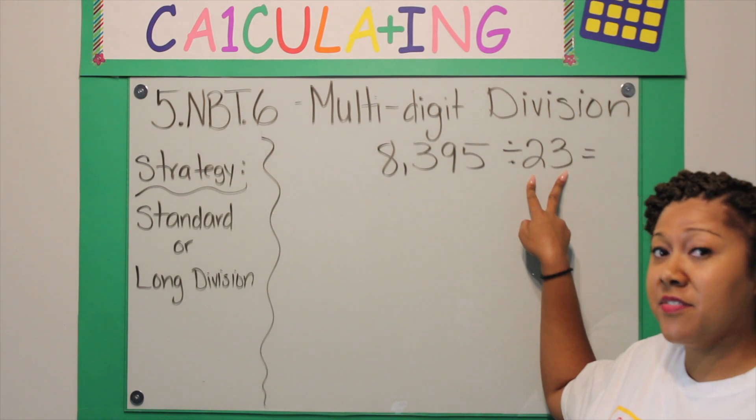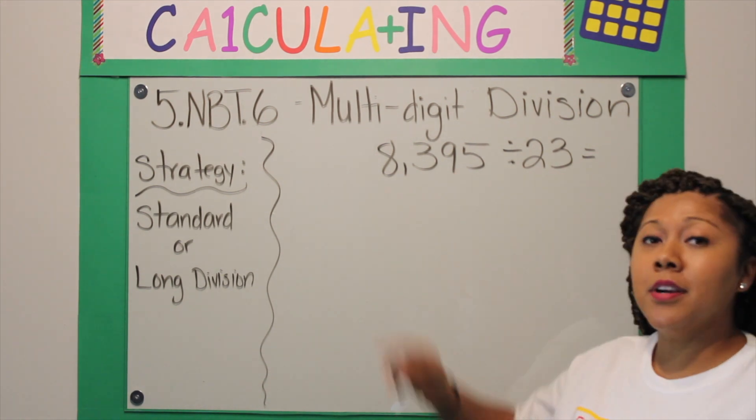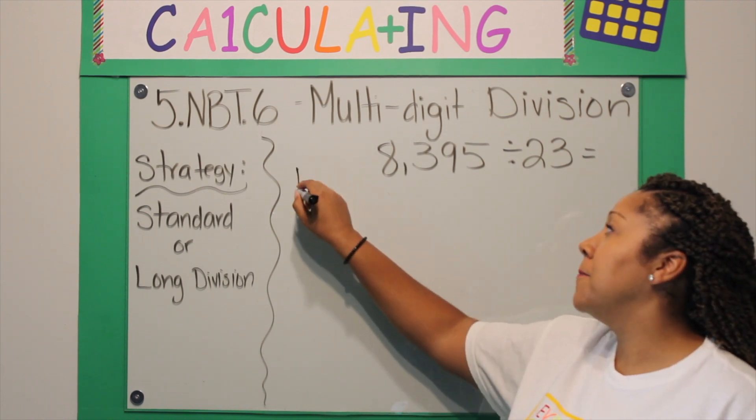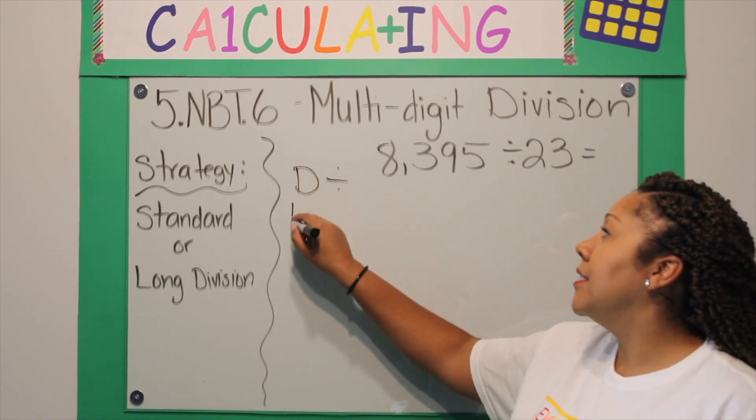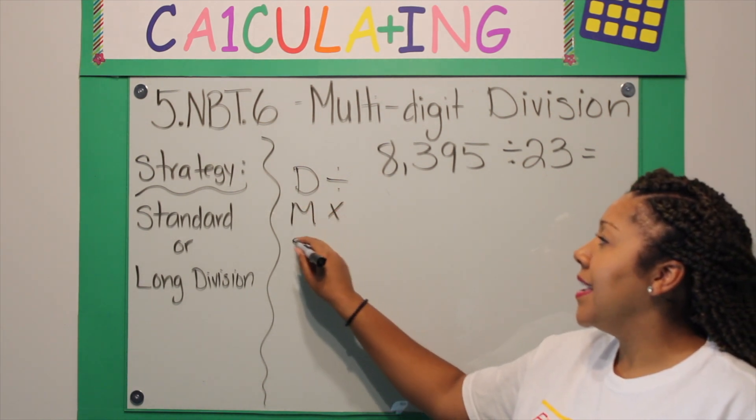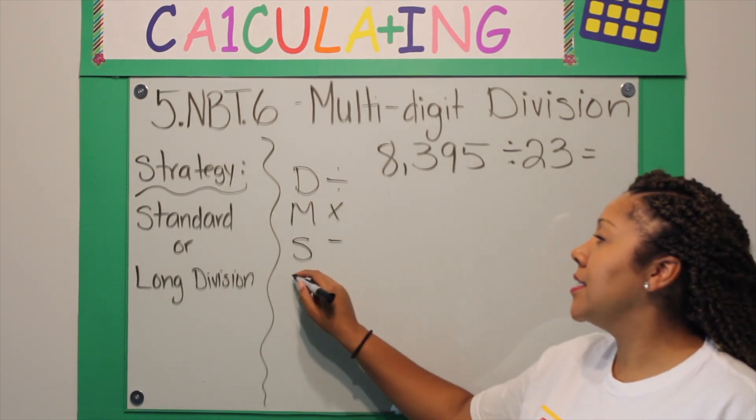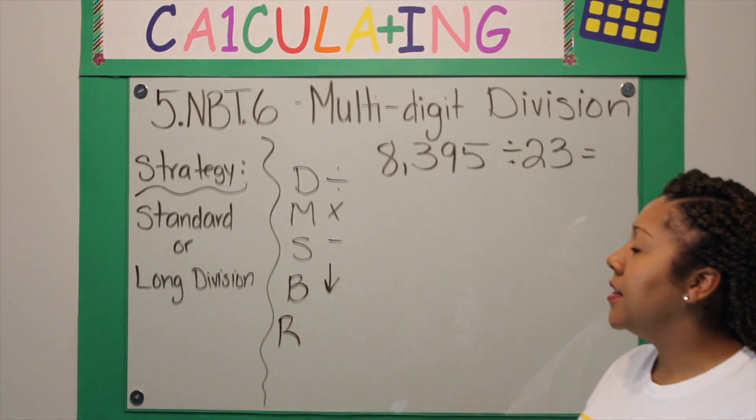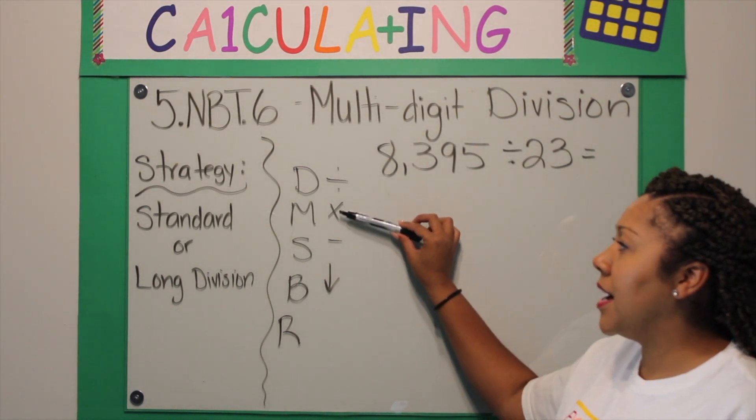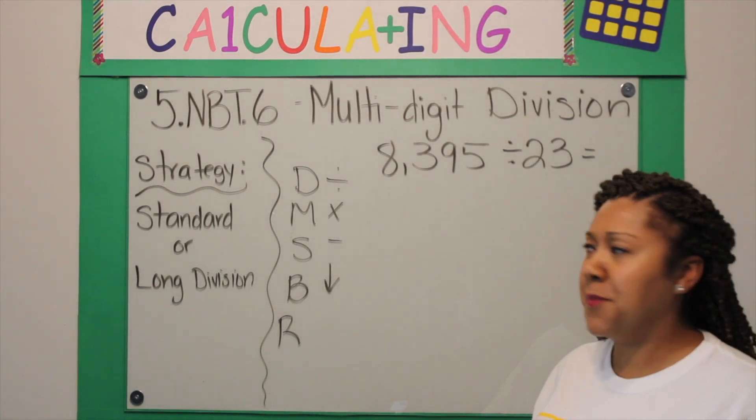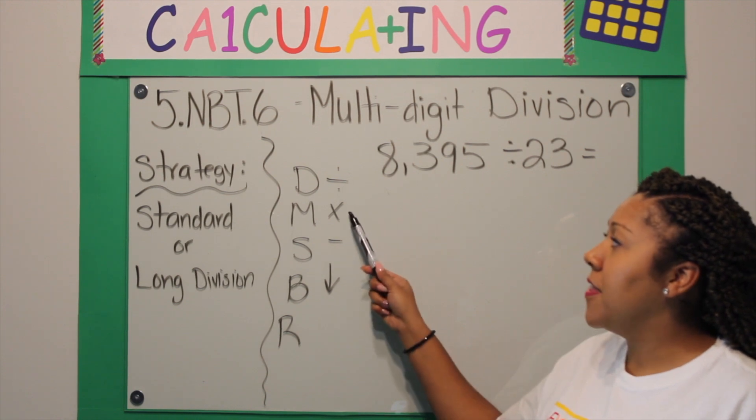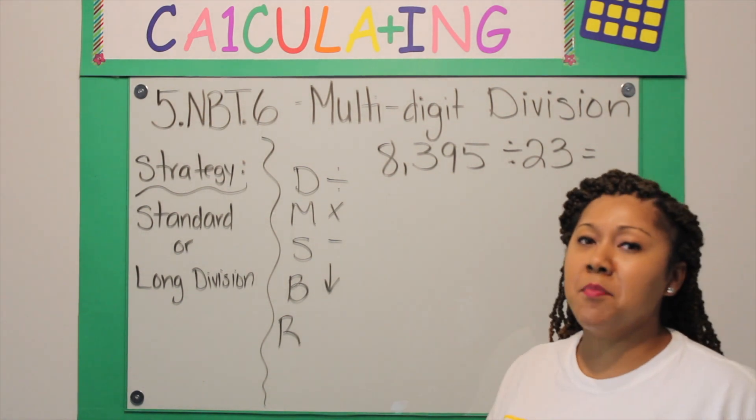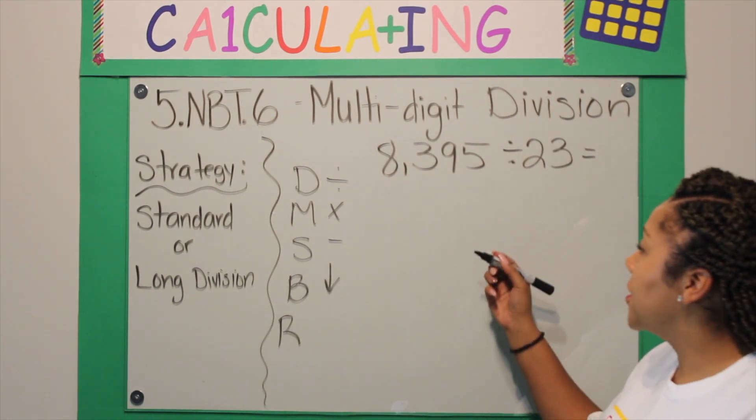This is long division for fifth grade. You actually have to divide a two-digit divisor by a four-digit dividend. So what I like to do is write my steps on the side: D stands for divide, M stands for multiply, S is subtract, B is bring down, and R is repeat. I like to use the acronym 'Does McDonald's Sell Burgers Really.' So you're going to divide first, then multiply, subtract, bring down the next digit, and then repeat the process all over again.